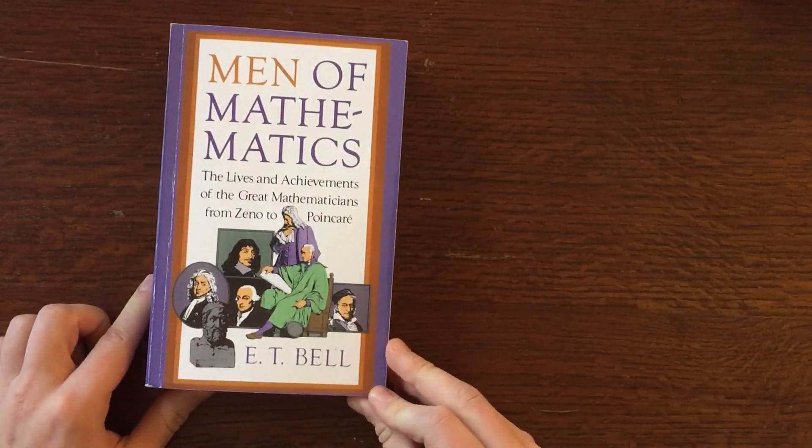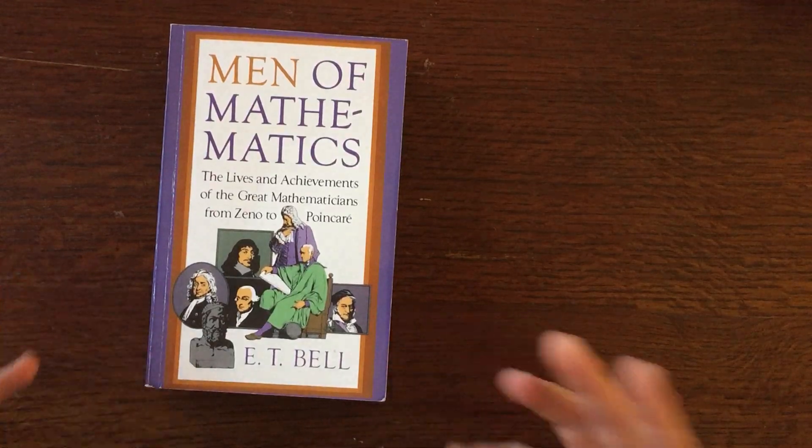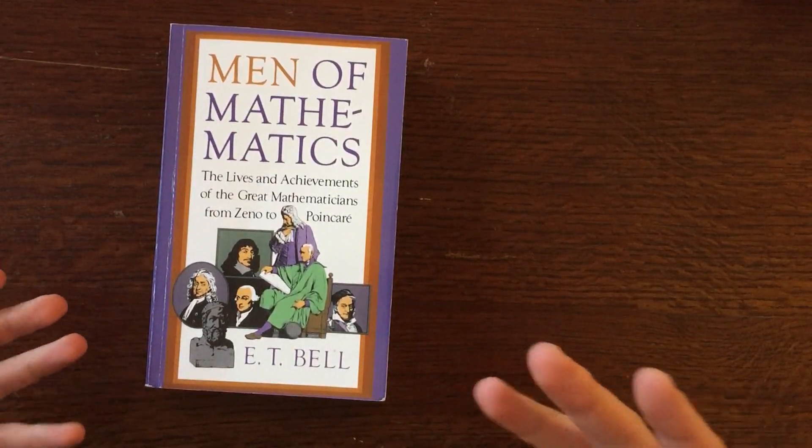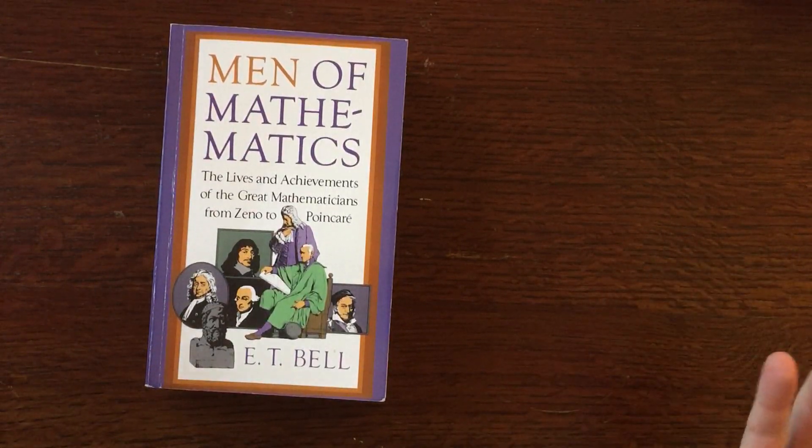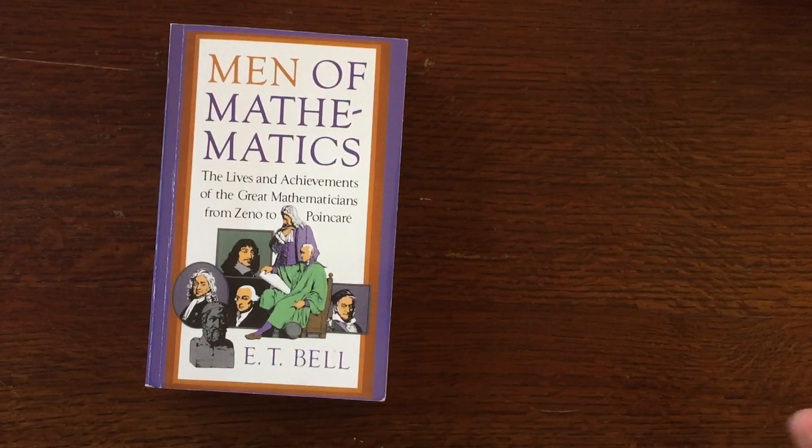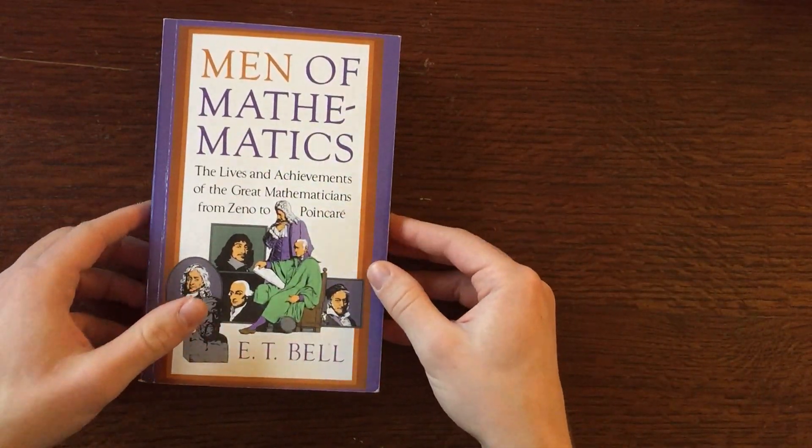Just simple things like, for some reason I didn't put two and two together that René Descartes made Cartesian coordinates. It makes sense when you think about it, but it didn't cross my mind before.